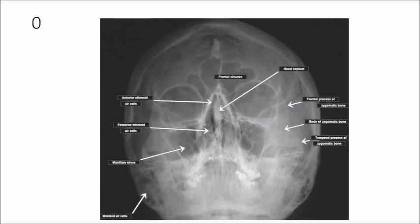In the PNS view, the main structures visible are the sinuses: frontal sinus, maxillary sinus, mastoid air cells, and ethmoidal sinus. Other structures include the frontal process of the zygomatic bone, the body, the temporal process of the zygomatic bone, and the zygomatic arch. Especially visible are all the paranasal sinuses — maxillary, frontal, ethmoidal, and sphenoidal sinus if the mouth is opened widely.